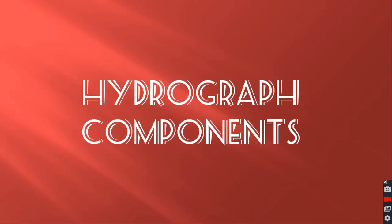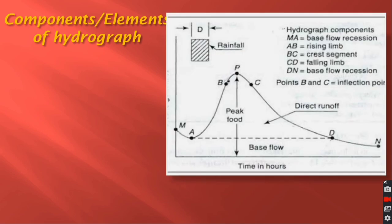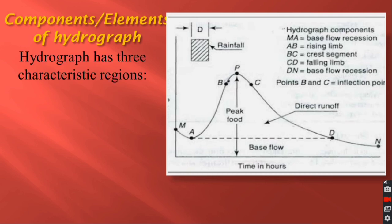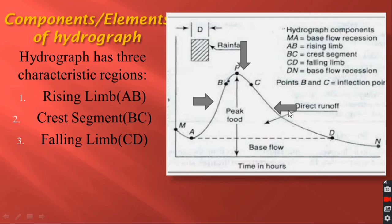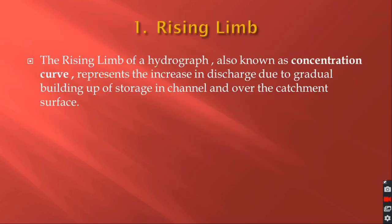Hello friends and welcome back to our YouTube channel Future Engineer. Today's topic is components or elements of hydrograph. We have seen components of hydrograph in the last video. Now we will see them in detail. The hydrograph has three characteristic regions: first is rising limb from A to B, second is crest or peak segment from B to C, and the third important component is falling or recession limb from C to D.